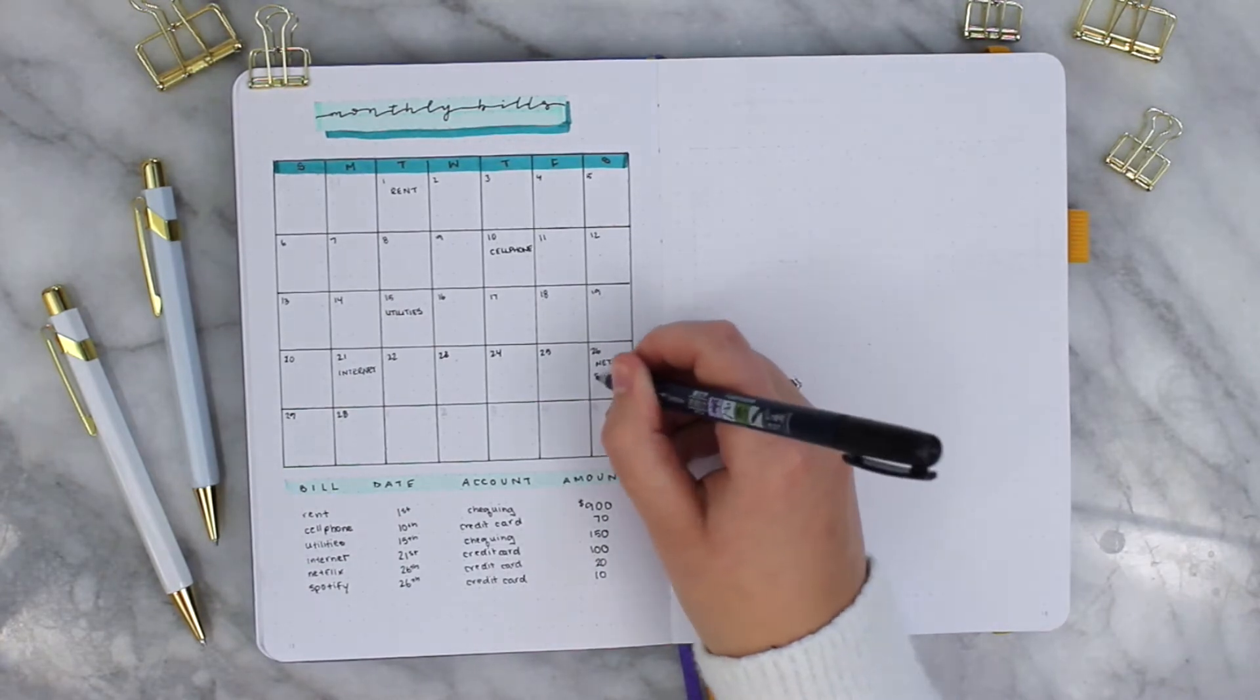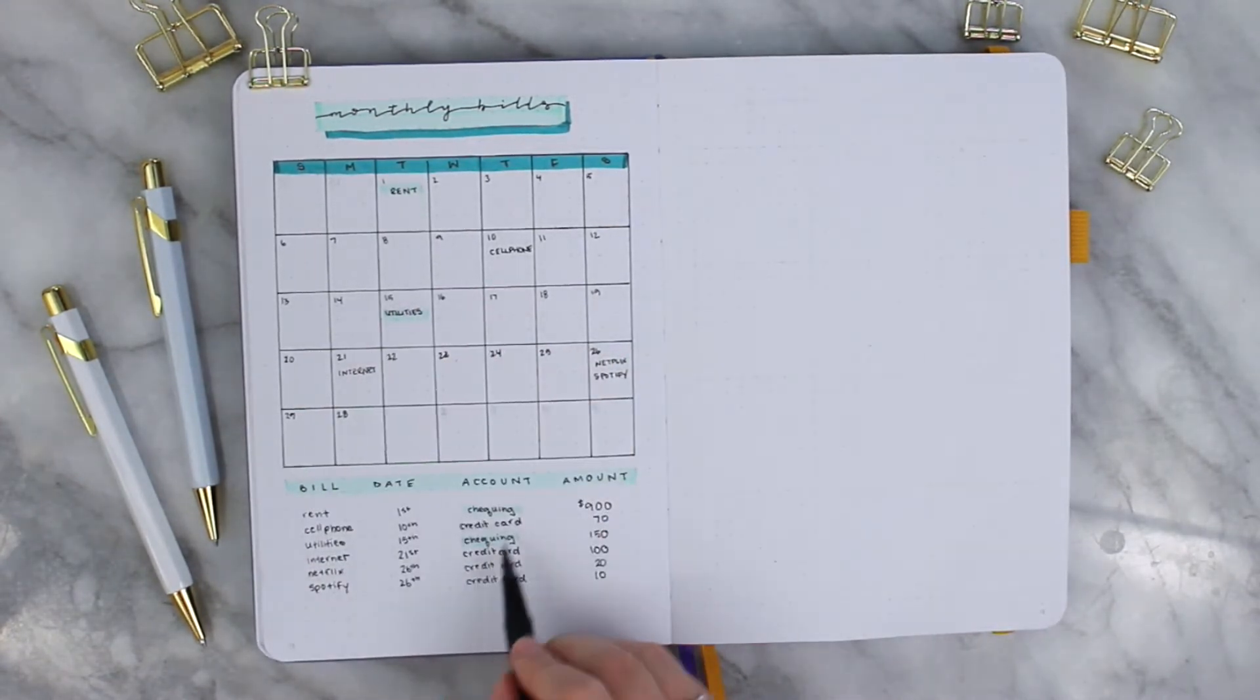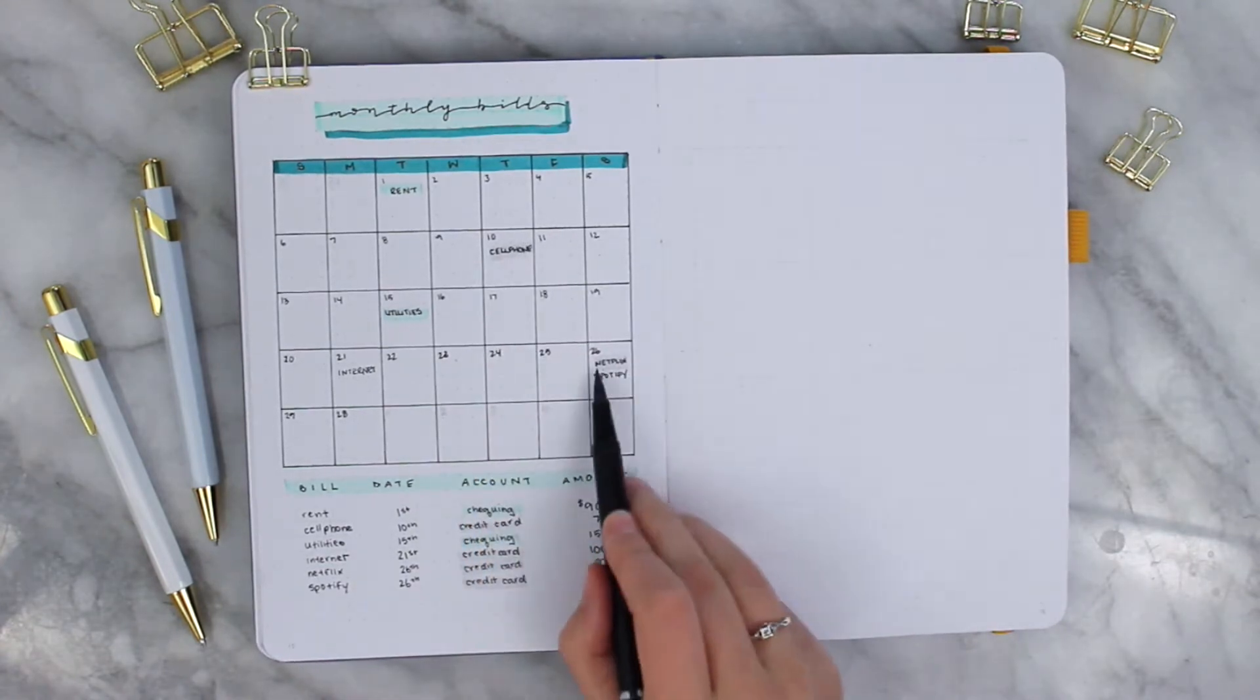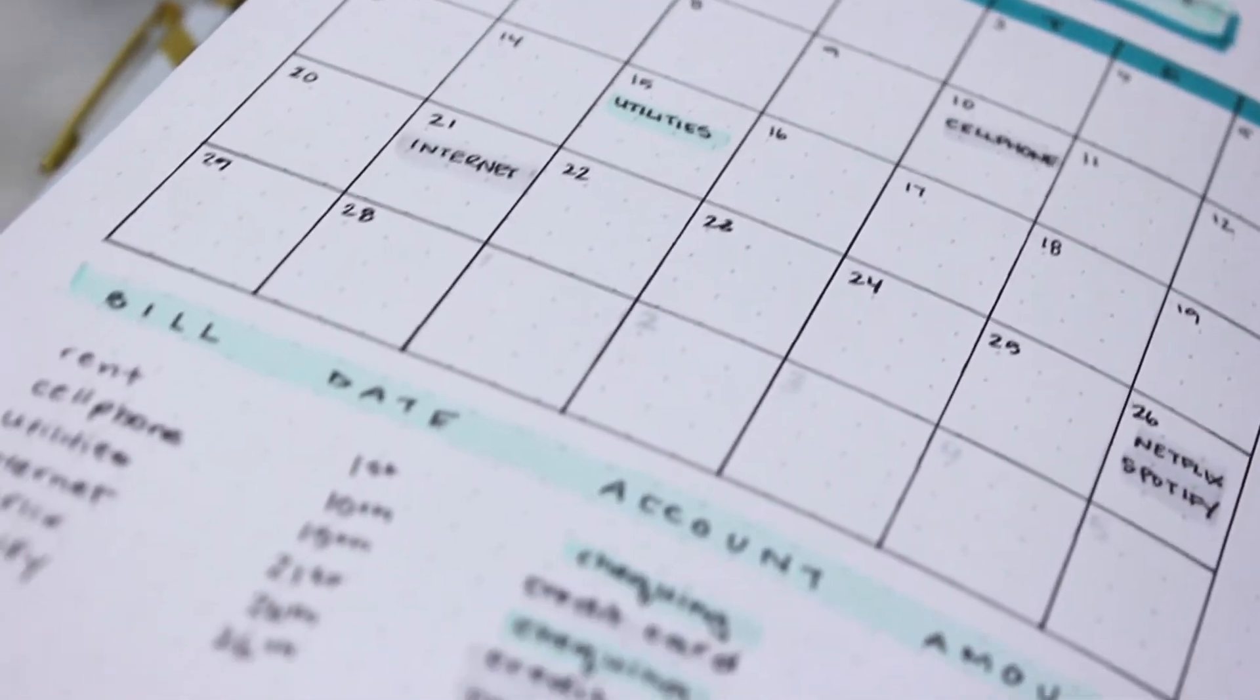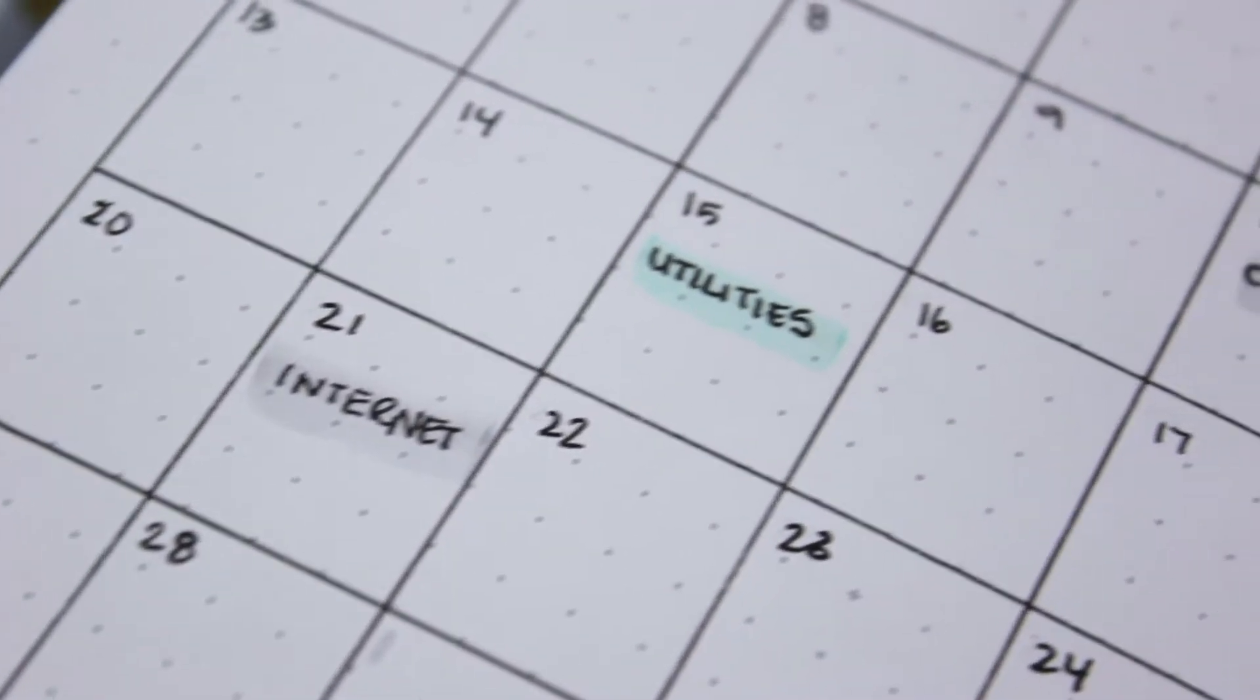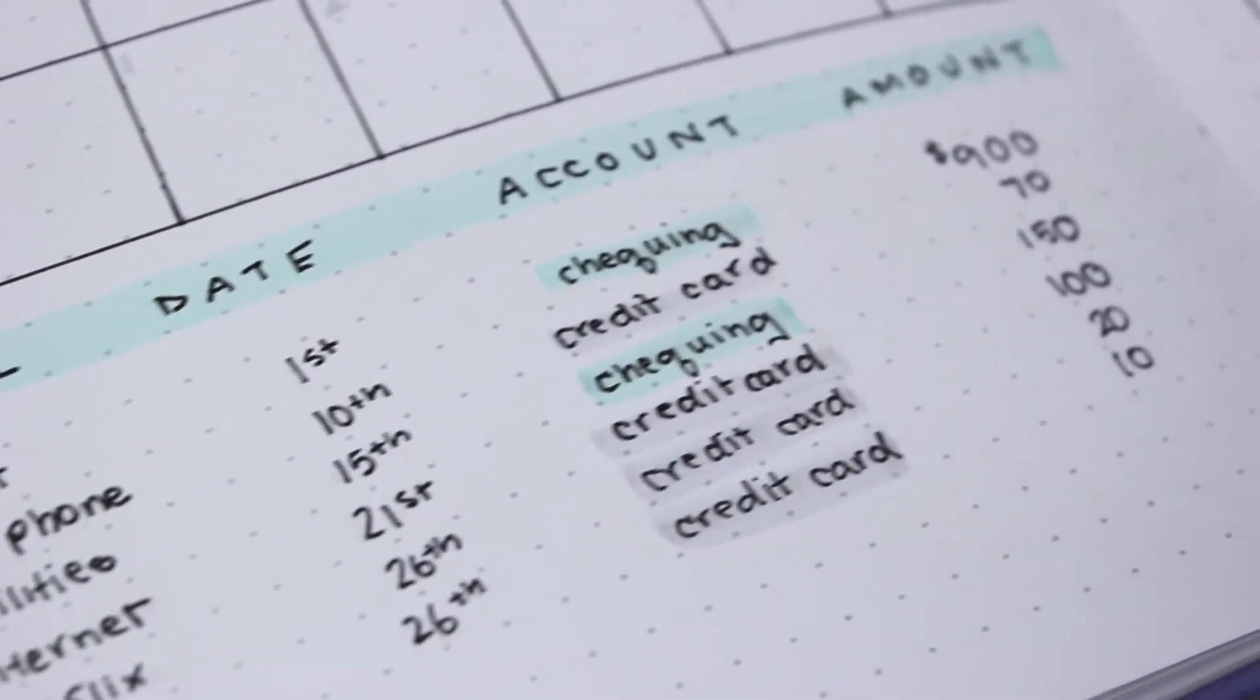Now taking that information from the bottom, I'm then going to be filling it into my monthly calendar and because I like to have things color-coded, I did end up grabbing a Tombow brush pen and filling in the color blue for things coming out of my checking account and then a light gray for the things coming out of my credit card.